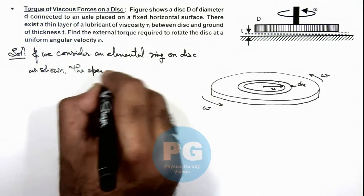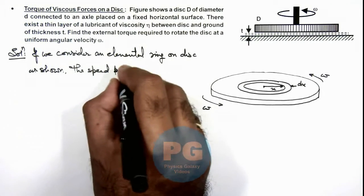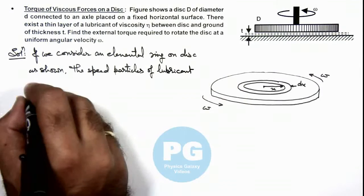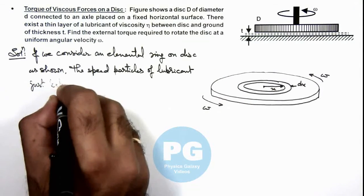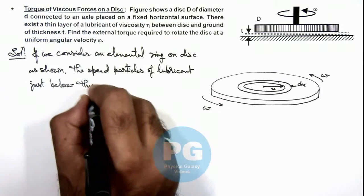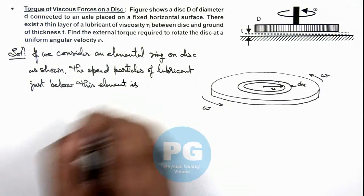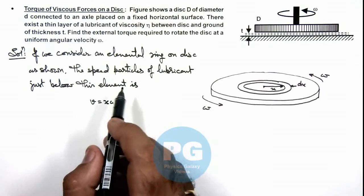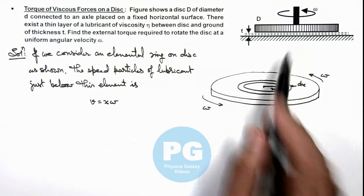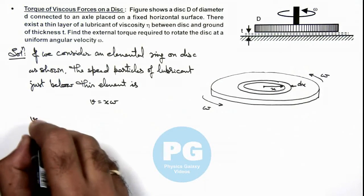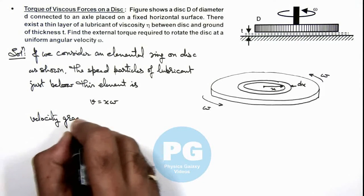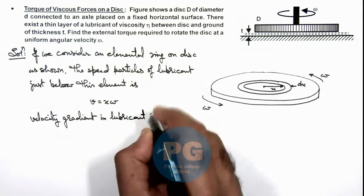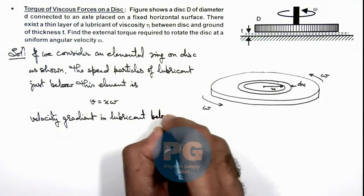The speed of particles of lubricant just below this element is, if we calculate the speed, that will be equal to x omega. And we know the particles of lubricant which are in contact with ground, these are at rest. So we can calculate the velocity gradient in lubricant below this element.